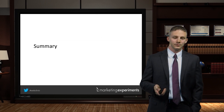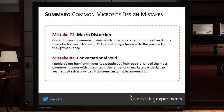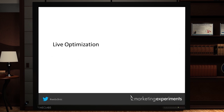So here are the two mistakes to watch out for: Macro distortion — trying to ask somebody to clean the garage before they're ready; help them conclude that it's good to do so. And conversational void — completely losing visitors with too many options, or too much or too little information. It's always a balance. With that, let's go into live optimization.